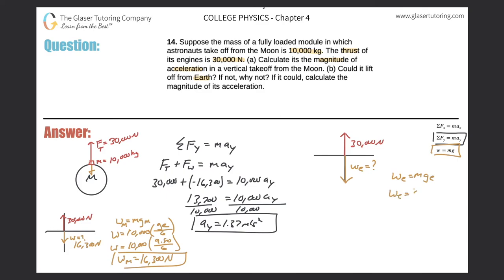The weight on Earth equals the mass of the object multiplied by the gravitational acceleration on Earth. So the weight on Earth is 10,000 times 9.80. We don't even need a calculator for that — it's 98,000 newtons. This looks interesting: the weight on Earth is 98,000 newtons.